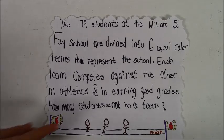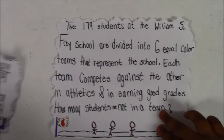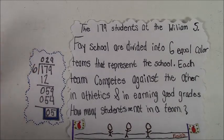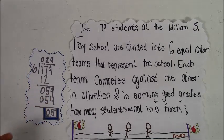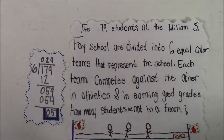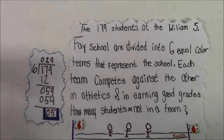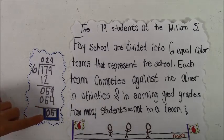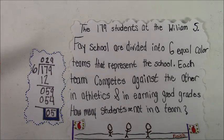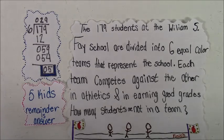This time we paid attention to the words 'are not in a team.' The problem was 179 divided by six, and we got 29 remainder five. In this problem, you're going to use the remainder as the answer, because it asks how many are not in a team. The remainder means you can't make another full group, so the answer is five kids — use the remainder as the answer.